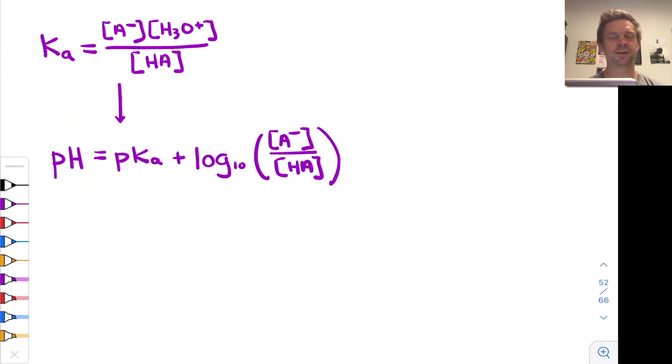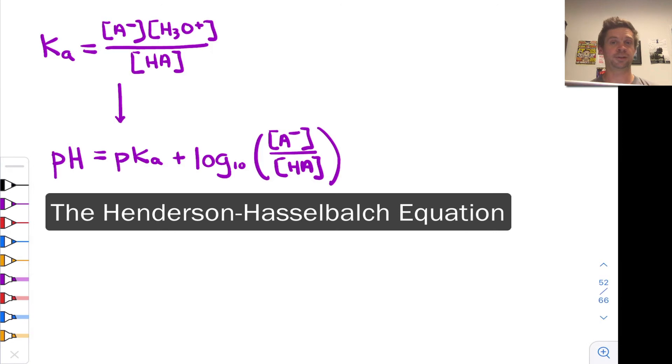This is what we call the Henderson-Hasselbalch equation that makes calculating the pH of a buffer relatively easy. Now, strictly speaking, since all of this depended on the system being in equilibrium, these concentrations refer to equilibrium concentrations of A- and HA. But as we saw in the problems and in the calculations that we've done previously, quite often,